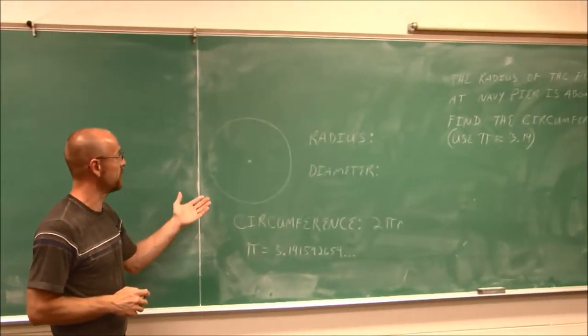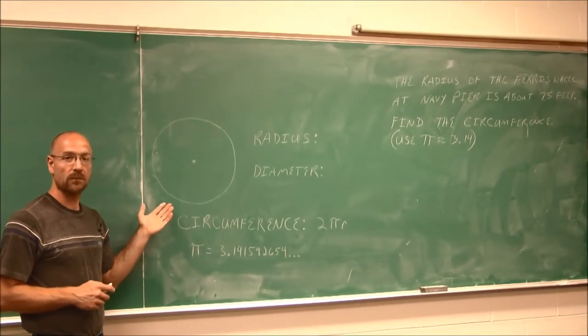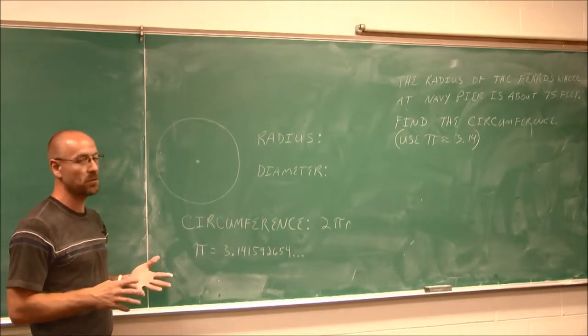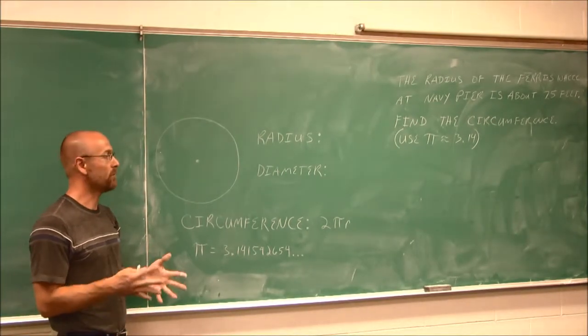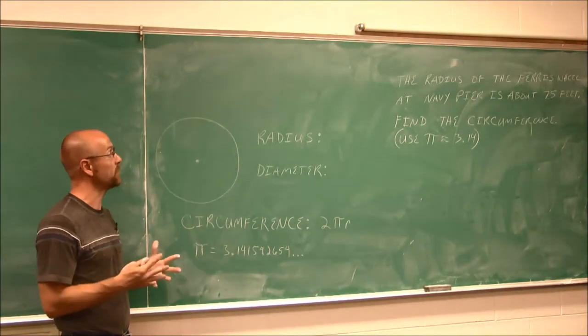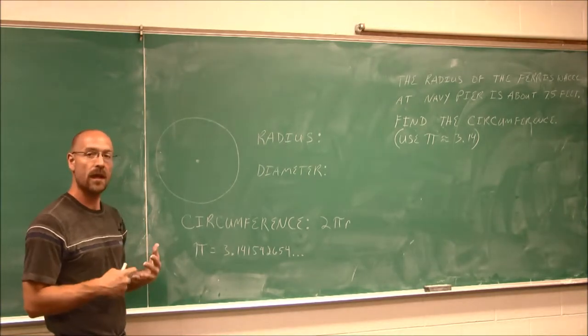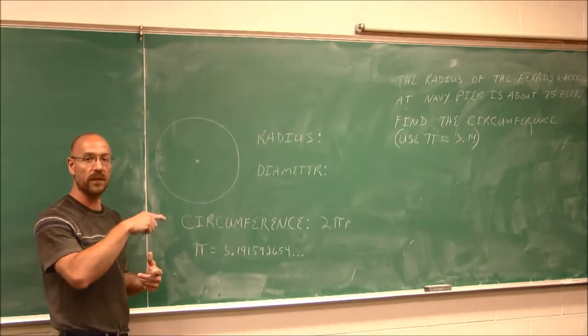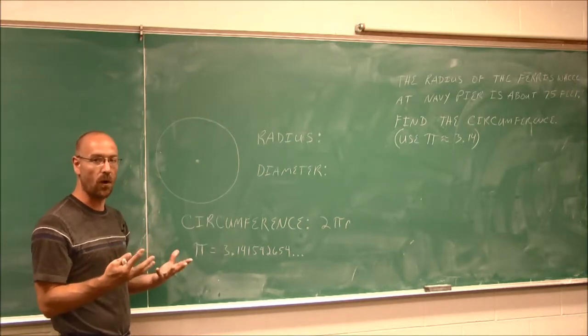Explore the concept of circumference. Now, in previous sections, we talked about perimeter. We found perimeters of different shapes - triangles, rectangles - and we found those by simply adding up the distance of all sides.